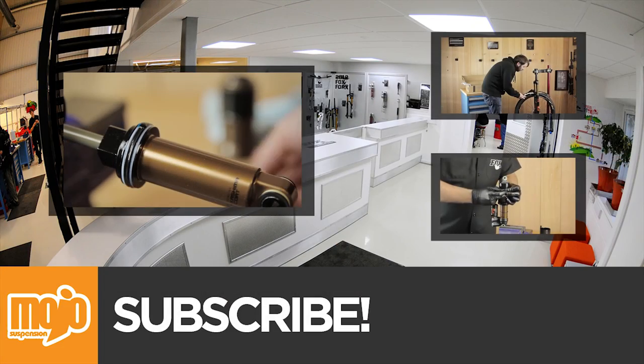So now we've fitted the NA air shaft, it's an awesome upgrade to transform your 34 fork. The NA air shaft will give you the opportunity to add volume spacers to make your fork feel more progressive, a bit more bottom out resistance, and also it's quite easy to change the travel as well. Don't forget to subscribe.